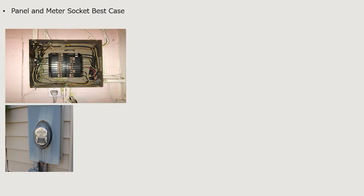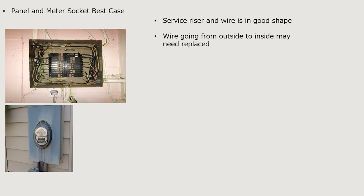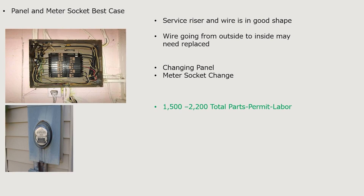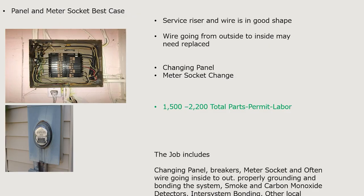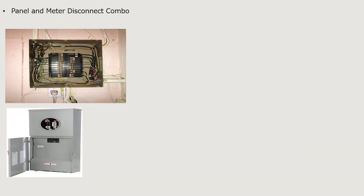Scenario two: panel and meter base — best-case scenario. We're coming out and changing the meter socket, assuming the service riser and wire are in good shape. The wire going from inside to outside may need to be replaced, and often it does. This inside-outside job is going to be between $1,500 and $2,200 total — parts, permit, and labor. It often can be done in one day but adds quite a bit of labor, as it can be logistically tough to change out the meter socket.